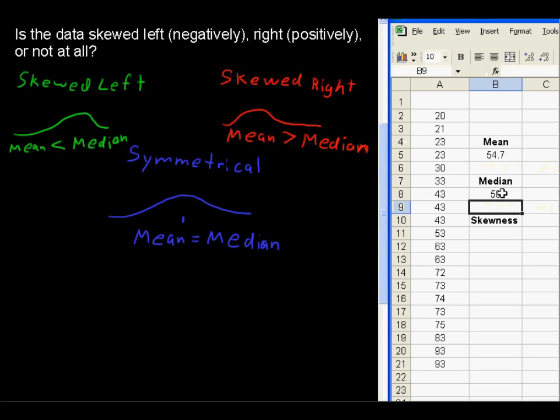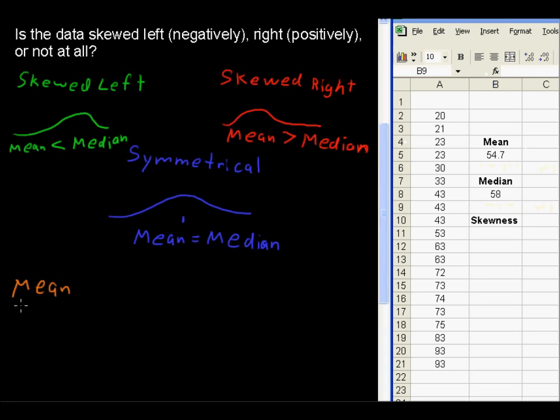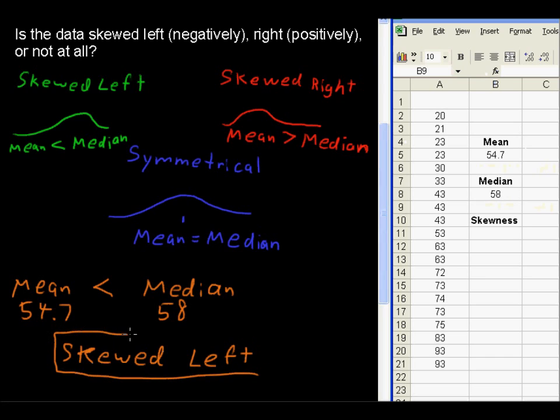Right away, we know that this is skewed left. So because the mean of 54.7 is less than the median of 58, we say that this is skewed left, or skewed negatively. So that negative does not mean that we have negative numbers. It just means that it's going to the left. So skewed left. Our data is skewed left.